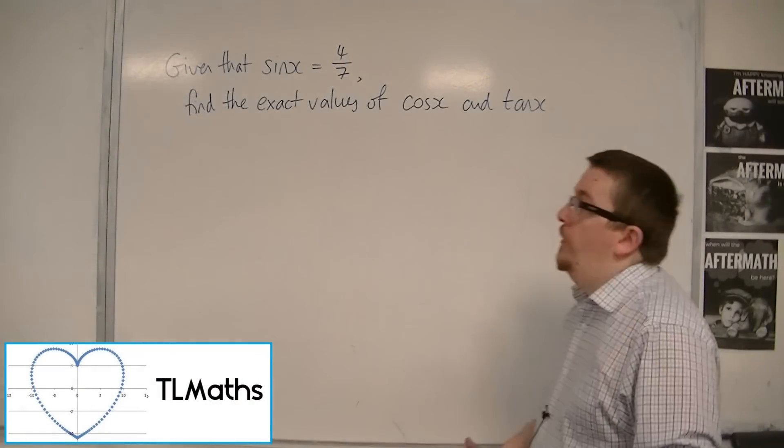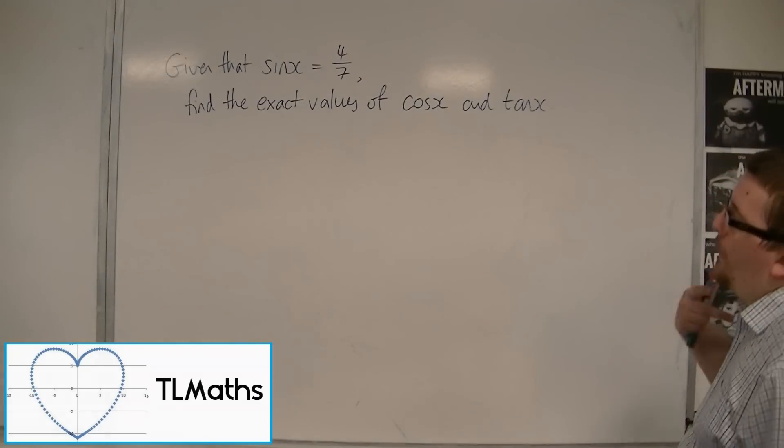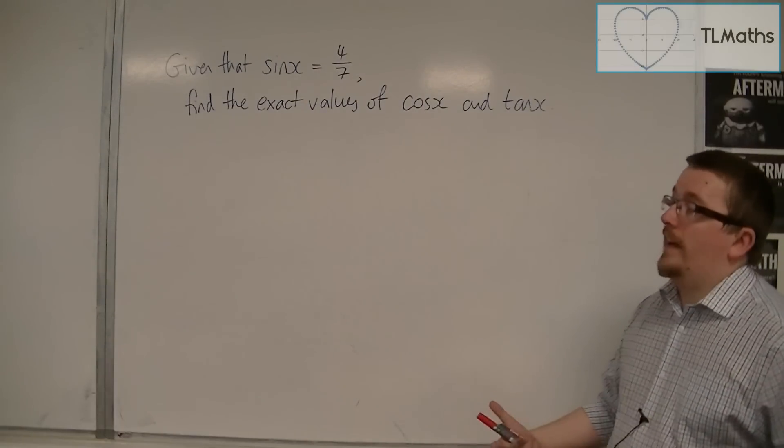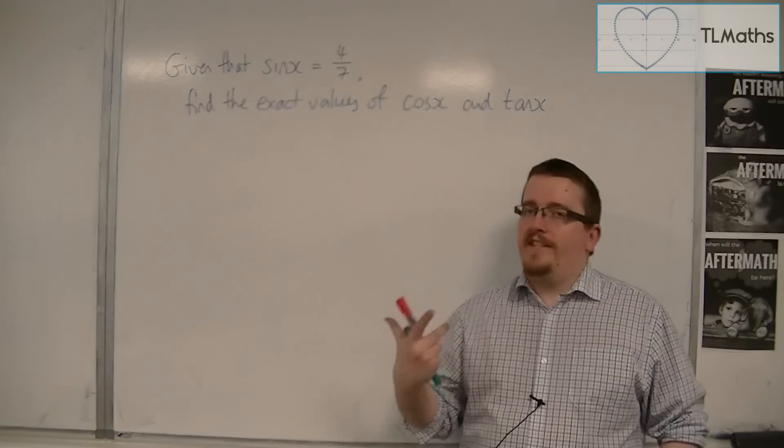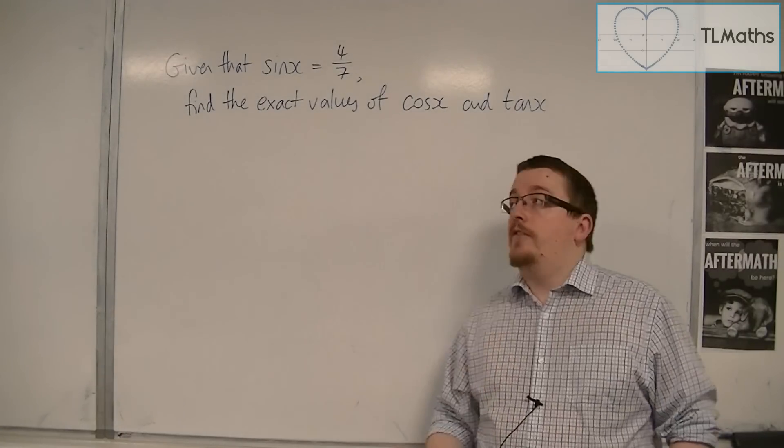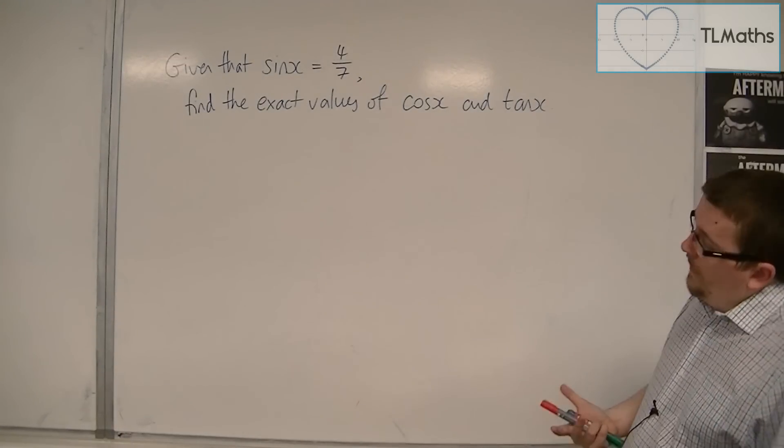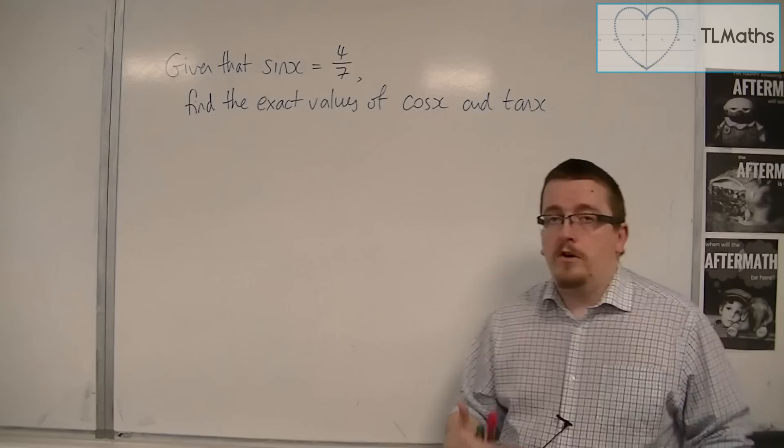In this video, I want to look at explaining how to find the exact value of cos(x) and tan(x) if we're given sine of x. So we're told that sin(x) is 4 over 7.